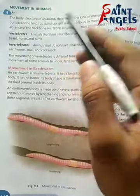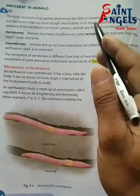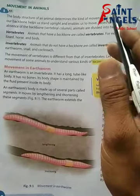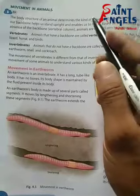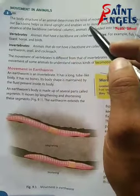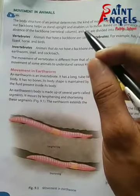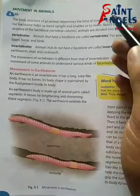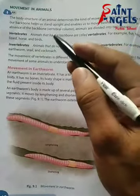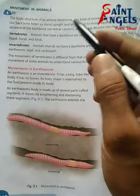The body structure of an animal determines the kind of movement it exhibits. Ek animal ki body structure is baat ko determine karti hai — nirdharit karti hai, tay karti hai — ki vah kis tarah ki movement karta hai. We know that our backbone helps us stand upright and enables us to move. Hum jaante hain ki hamari backbone, means reed ki haddi, hamein seedhe khade hone mein help karti hai aur hamein aage badhne ke yogya banati hai.